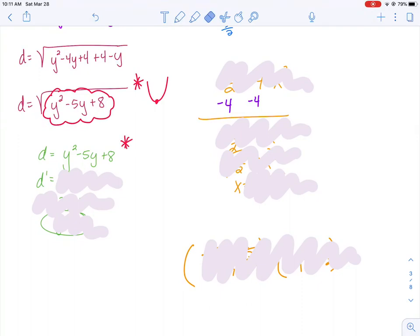If this is my equation now that I'm trying to find the minimum of, I can find my derivative. I can find my critical numbers by setting it equal to 0. I can find that I have a critical number at 5 halves, at y equals 5 halves.